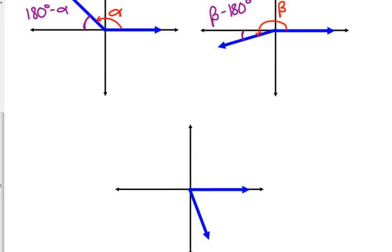Last case: an angle in the fourth quadrant, measured from the positive x-axis — I'll call this one theta. There's nothing special about calling them alpha, beta, and theta; I could have used completely different names. The reference angle is the measure to the closest horizontal axis, which is the positive x-axis — that little piece. So it's 360 minus the angle, because those two pieces together make 360 degrees. Again, I don't want you to memorize this.